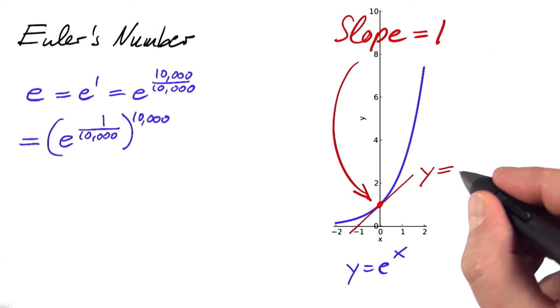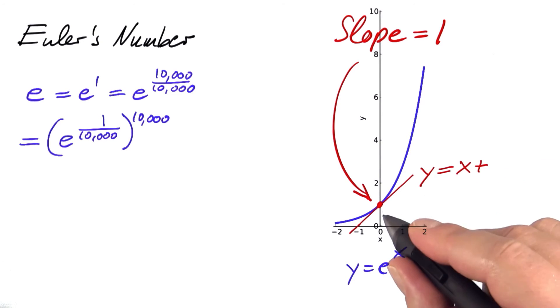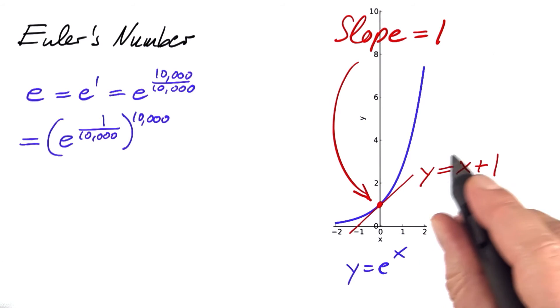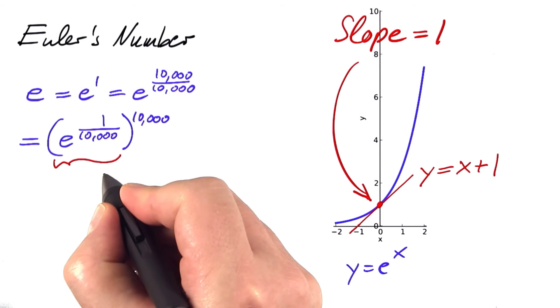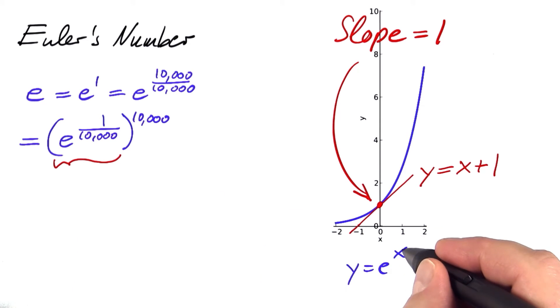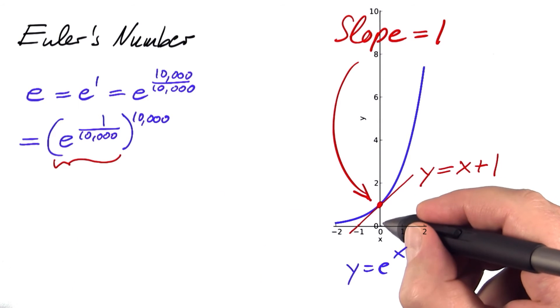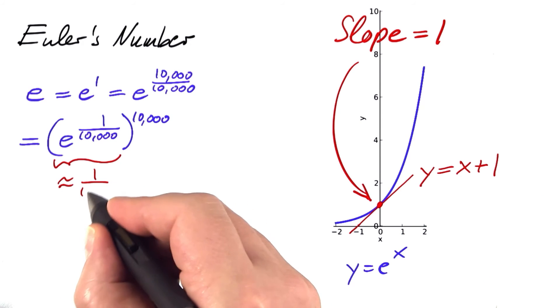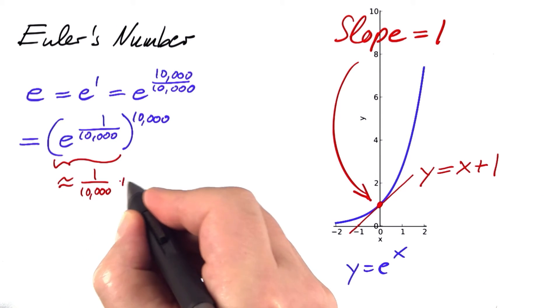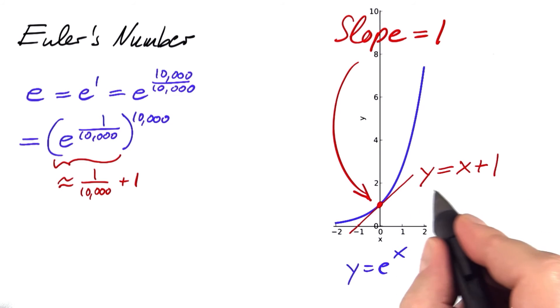The slope is 1, so we can just put x in here, plus the y-intercept is 1 as well. And now I'm using this equation for the tangent line to approximate this value, the value of e to the x at x equals 1 over 10,000. So this is approximately equal to 1 over 10,000 plus 1. We simply looked up that value using the tangent line.